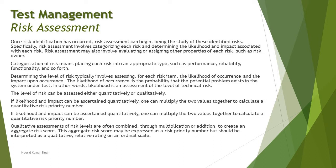From the previous tutorial, you will recall that risk management consists of four stages: risk identification, assessment, mitigation, and management. In this tutorial we get into the assessment part. Once you have identified a particular risk — whether a project risk or product risk — the more important thing is to assess it in detail to determine the level of risk, because the level of risk will determine how exactly you can mitigate it.